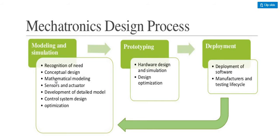The next process in mechatronics design is prototyping. Prototyping means hardware design and simulation. This is the actual hardware required as per our application. Design optimization means hardware and software — hardware must be minimized and results must be accurate and perfect. These are the requirements for prototyping, and according to that we design the hardware.